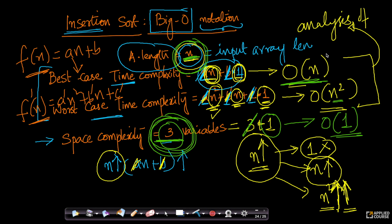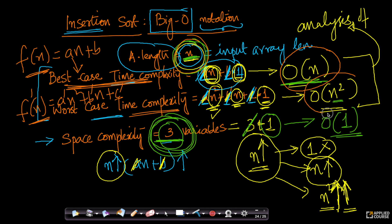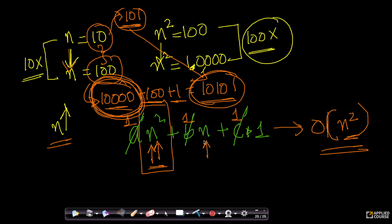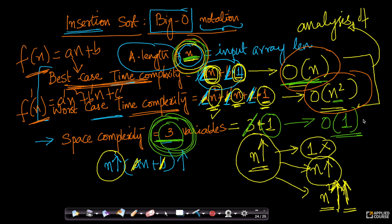In a nutshell, order of n means the best case time complexity increases proportional to input size. The worst case increases proportional to the square of the input size — most of that increase comes from the n² term. The space complexity stays constant — order of 1 means it doesn't change regardless of input size. This is the intuitive understanding of Big O notation, and in the next couple of videos I'll explain the more formal mathematical definition.